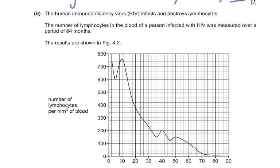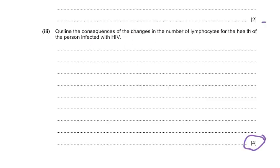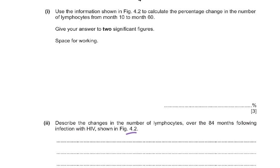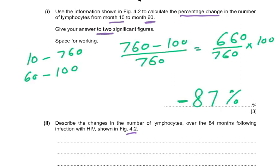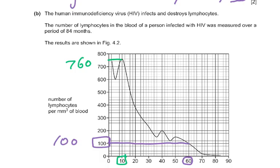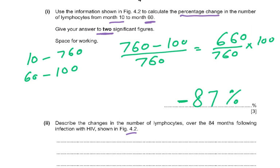We were supposed to calculate the percentage change from month 10 to month 60. Looking at the readings: at 10 months it was 760 and at 60 months it was 100. So: 760 minus 100 over 760, which is 660 over 760 times 100, giving minus 87%. It is negative because from 760 it went down to 100. So the percentage change is minus 87%.